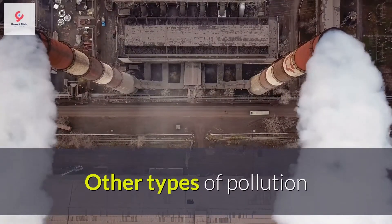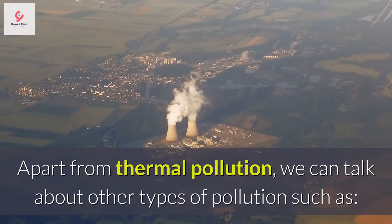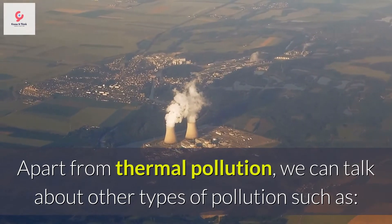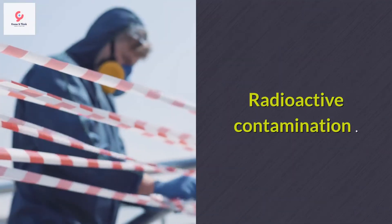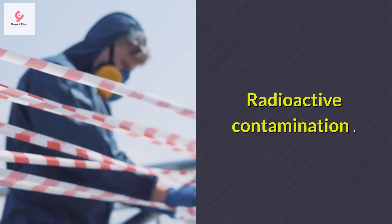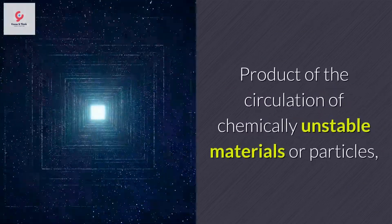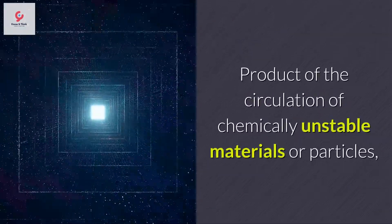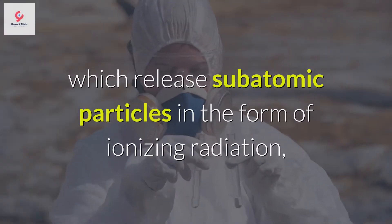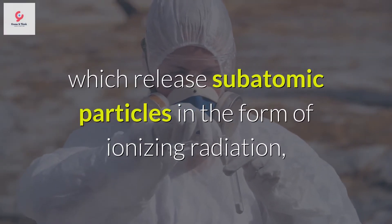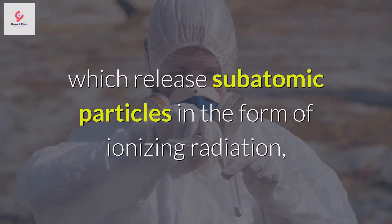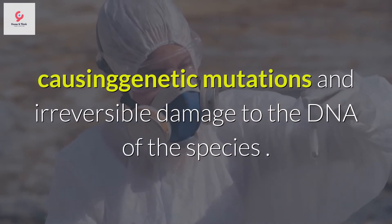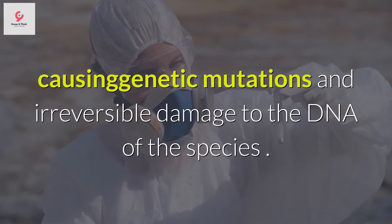Other types of pollution: apart from thermal pollution, we can talk about other types of pollution. Radioactive contamination is the product of the circulation of chemically unstable materials or particles, which release subatomic particles in the form of ionizing radiation, causing genetic mutations and irreversible damage to the DNA of the species.